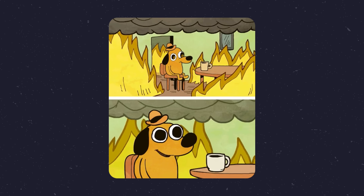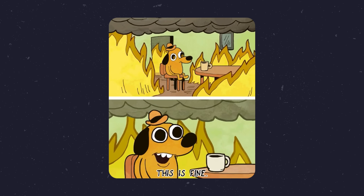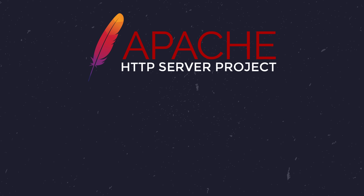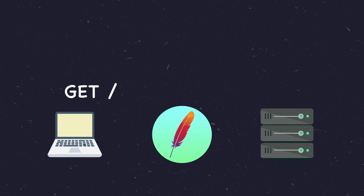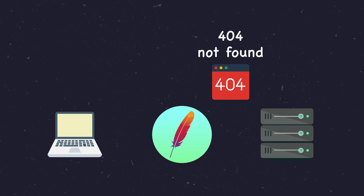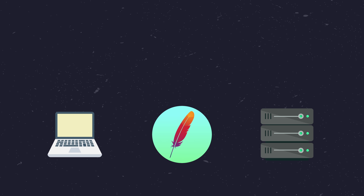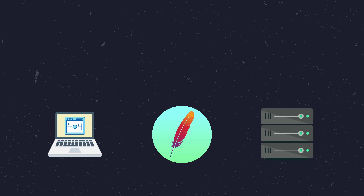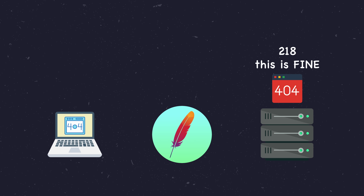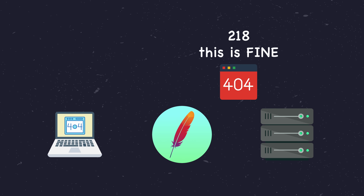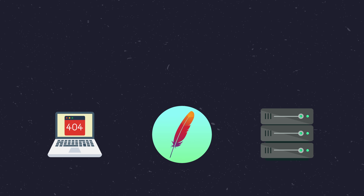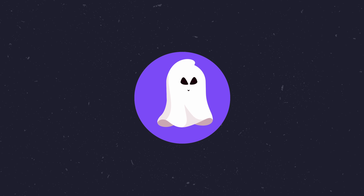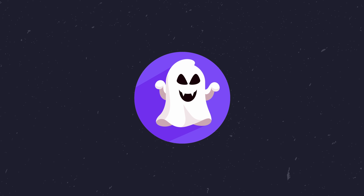Inspired by perhaps one of the greatest memes ever created, this HTTP status code is used to bypass the default behavior of an Apache web server that is reverse proxying and has the proxy error override option enabled. What this option does is intercept any responses from the upstream server that have an HTTP error code in them and discard their content, instead returning back the associated error page configured in Apache. If the server being proxied is aware of this, they may want to override this overridden behavior. And so the 218 'This Is Fine' status code is sent instead, which tricks Apache into not overriding the error and passes the content through to the client. I understand the need for this behavior, but the thought of returning a 200 status code for anything that's an error is kind of spooky, in my opinion.